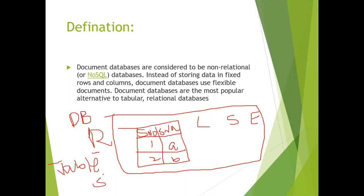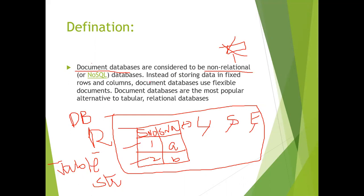The relational database is useful when you have structured data — all fields are text type — and all these tables have relations between one another. Whereas the document database is a non-relational database: non-relational means not using tables. The data must not be in the form of a table.